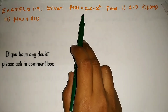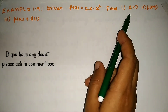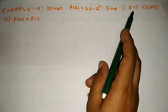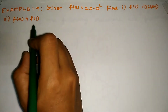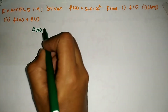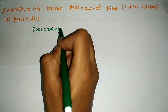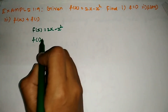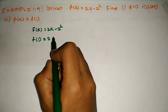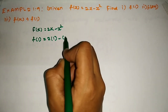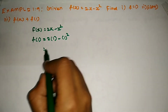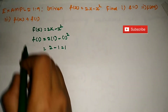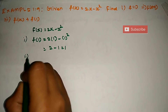For question 1, we need to find f of 1. f of x is equal to 2x minus x squared. So if x is equal to 1, then f of 1 is 2 times 1 minus 1 squared, which is 2 minus 1, so f of 1 is equal to 1.